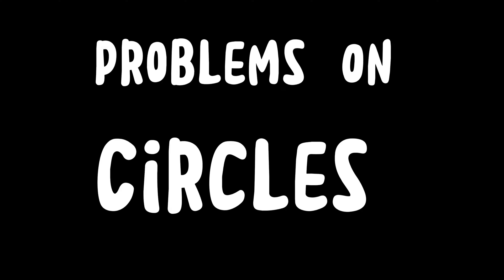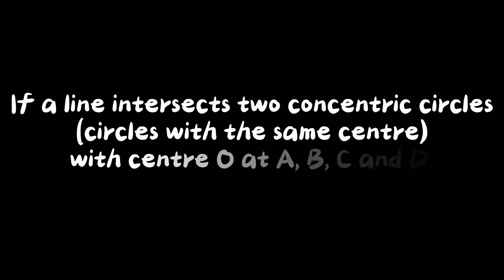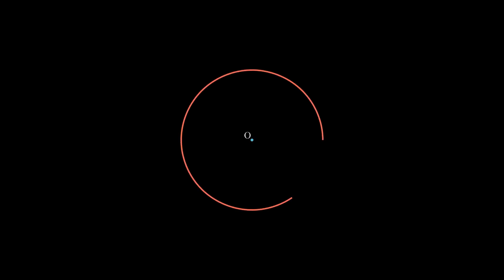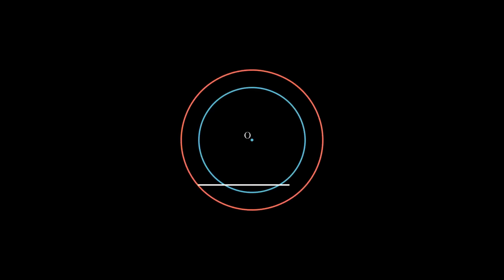In this video, we will understand and solve some typical problems based on theorems related to circles. Let's start with the first one. If a line intersects two concentric circles with center O at points A, B, C and D, then prove that segment AB is equal to segment CD.